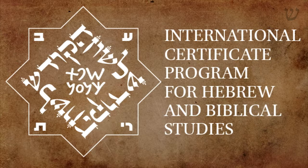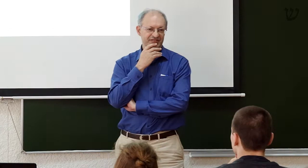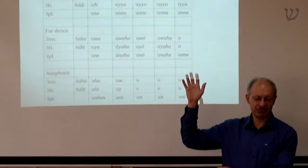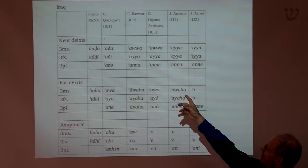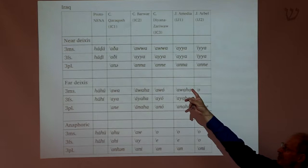I want to look at some of the developments of the demonstrative pronouns, because demonstrative pronouns are very closely related to so-called third-person pronouns. In fact, a third-person pronoun really is a kind of demonstrative, or it is a development of a demonstrative pronoun. NENA dialects can have either a set of two or a set of three demonstrative pronouns. Several dialects, like the Barwa dialect, have three sets of pronouns.